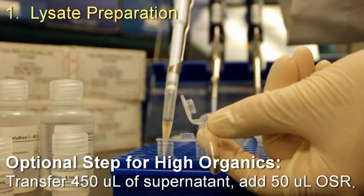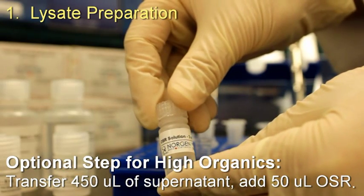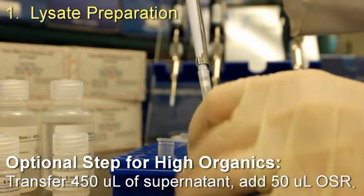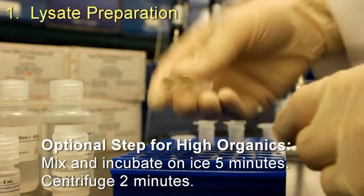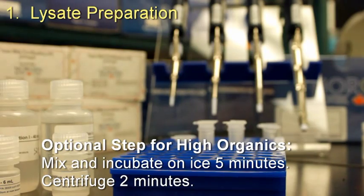For samples containing high organics, transfer 450 microliters of supernatant to a microcentrifuge tube and add 50 microliters of solution OSR. For typical soil samples, you may skip this and go straight to step 1i. Mix and incubate on ice for 5 minutes and centrifuge for 2 minutes.